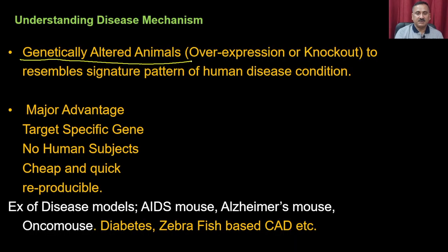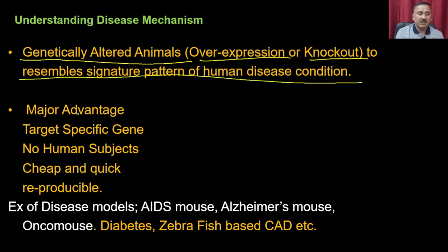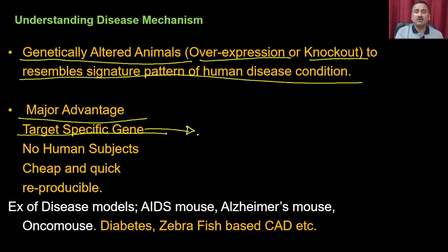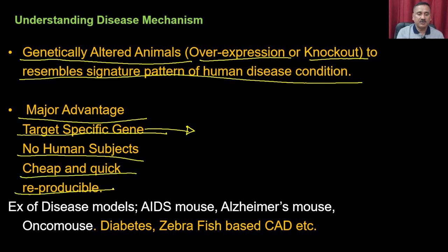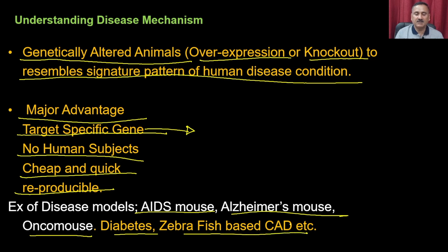Genetically altered animals either over-express or knock out genes to resemble the signature pattern of human disease conditions. The major advantages are: they target specific genes, no human subjects are involved, and they are cheap, quick, and reproducible. Disease models developed include the AIDS mouse, Alzheimer's mouse, Onco mouse, diabetes models, and zebrafish-based models.